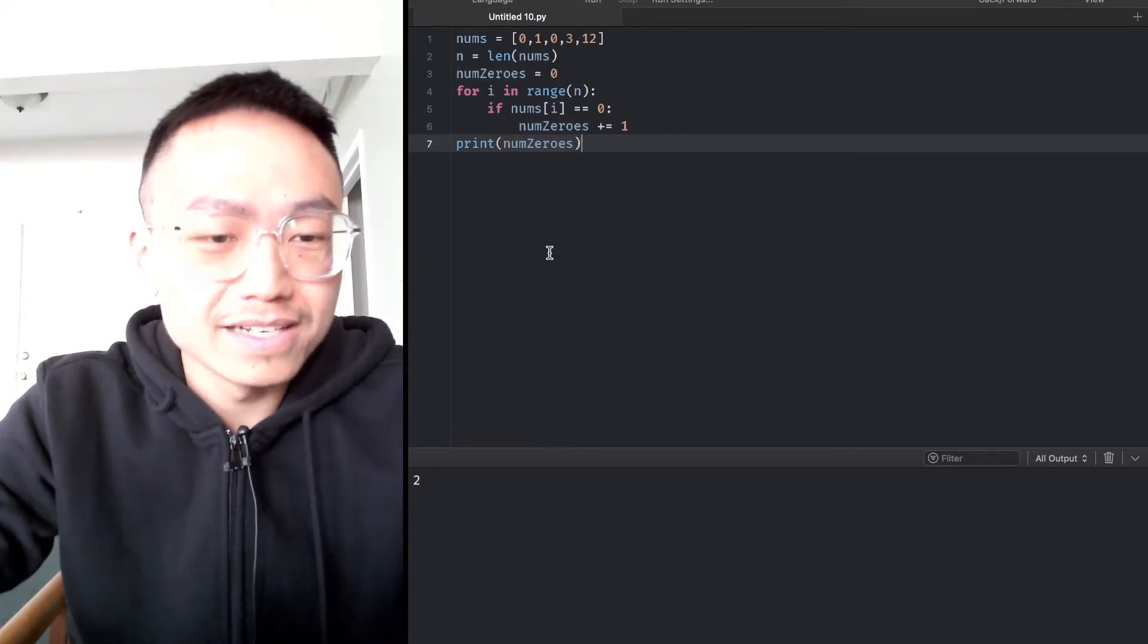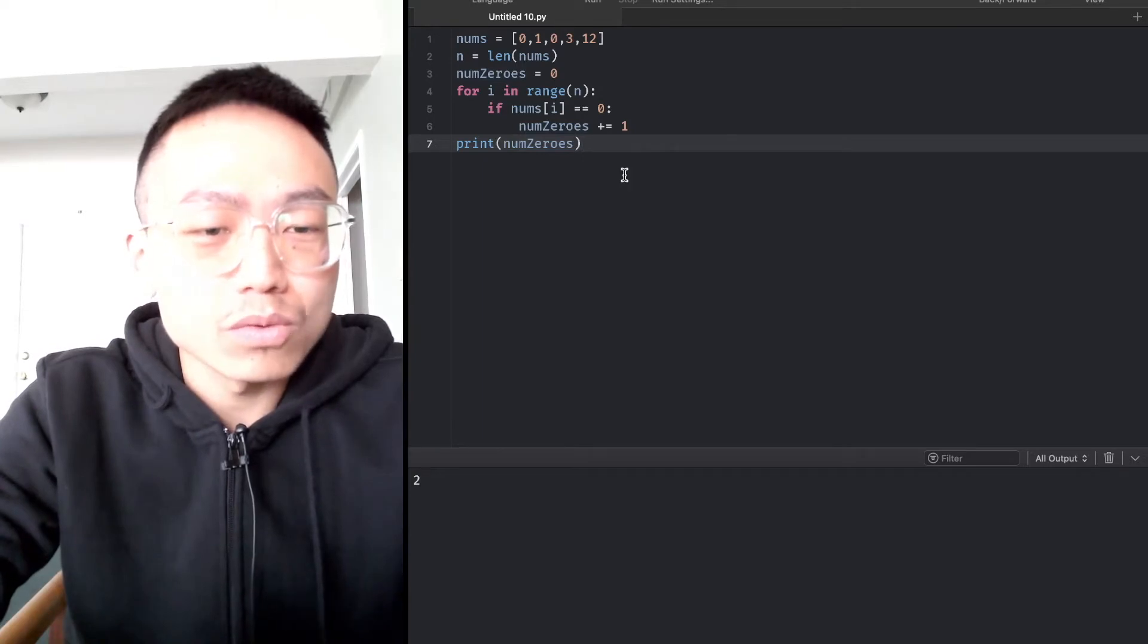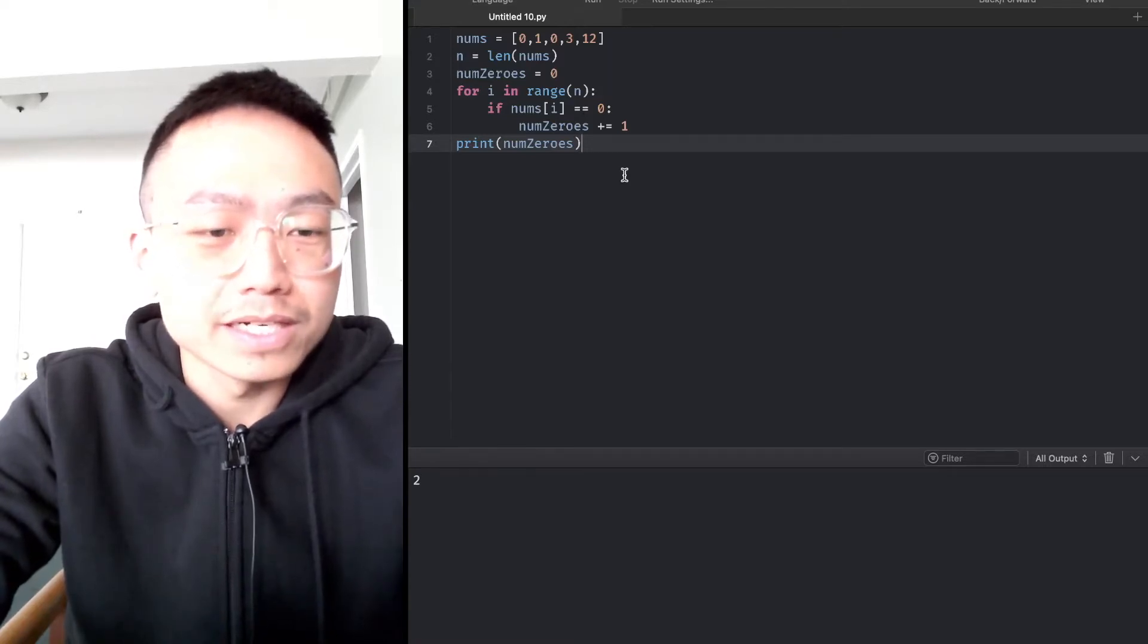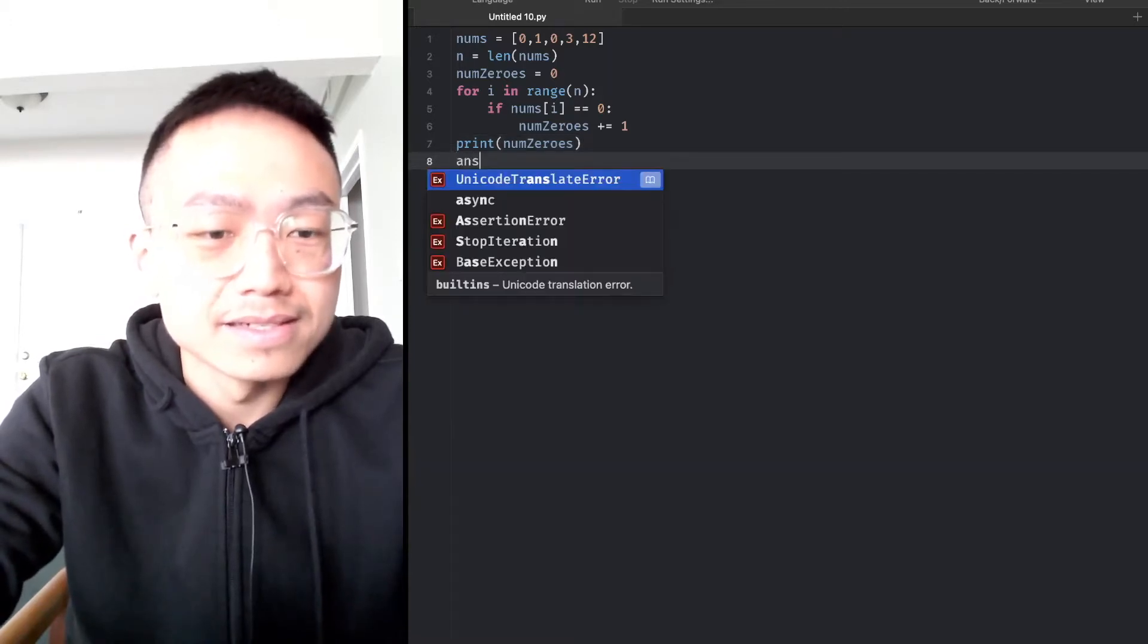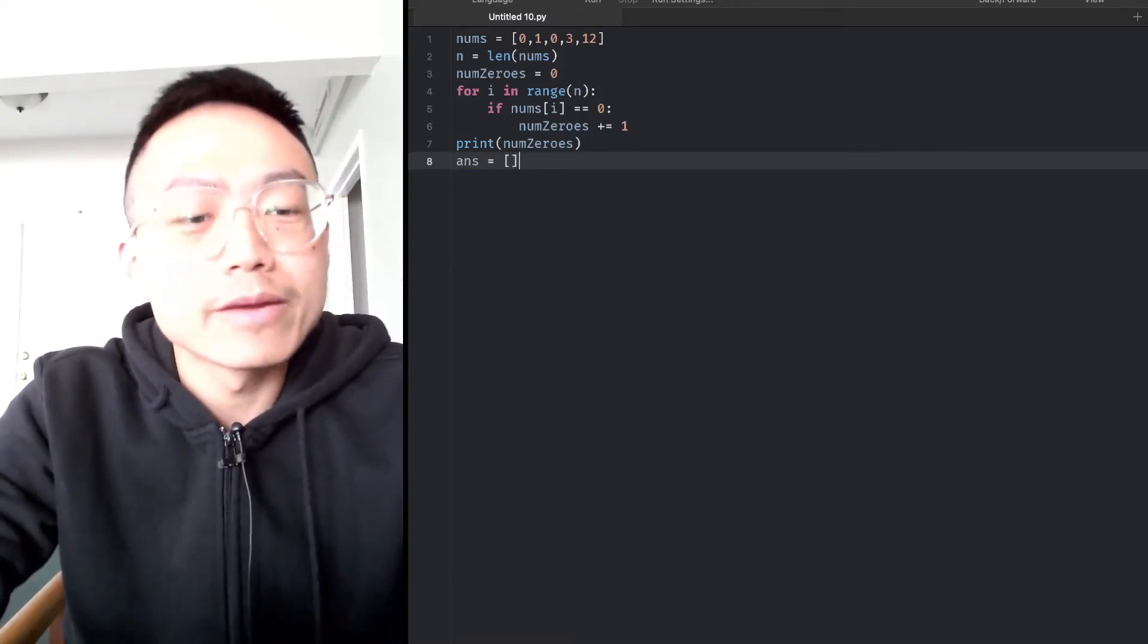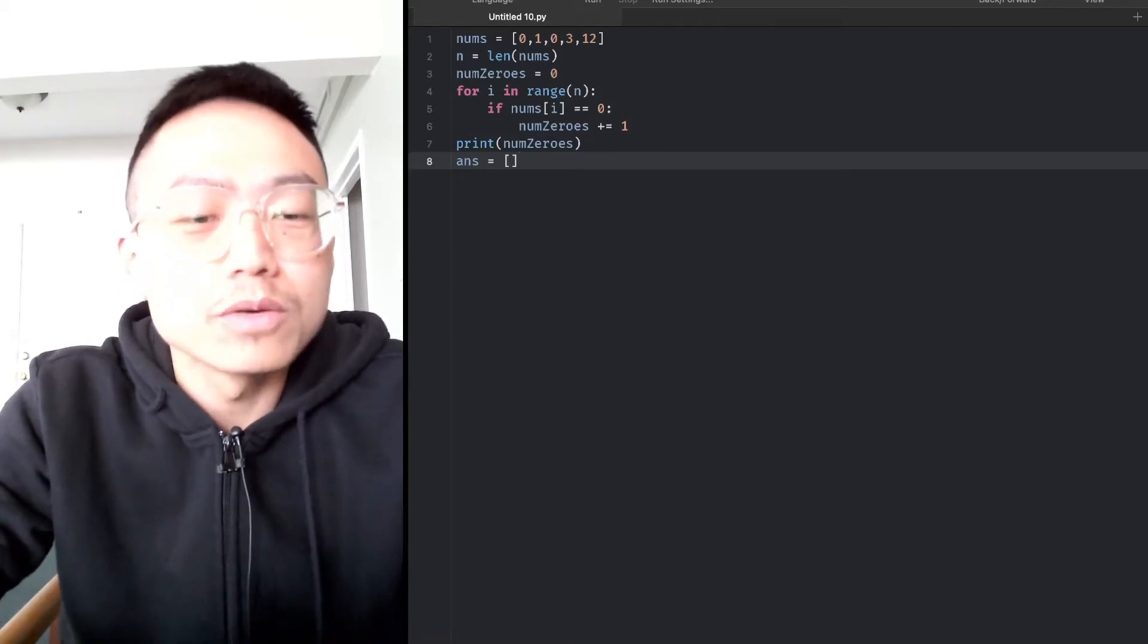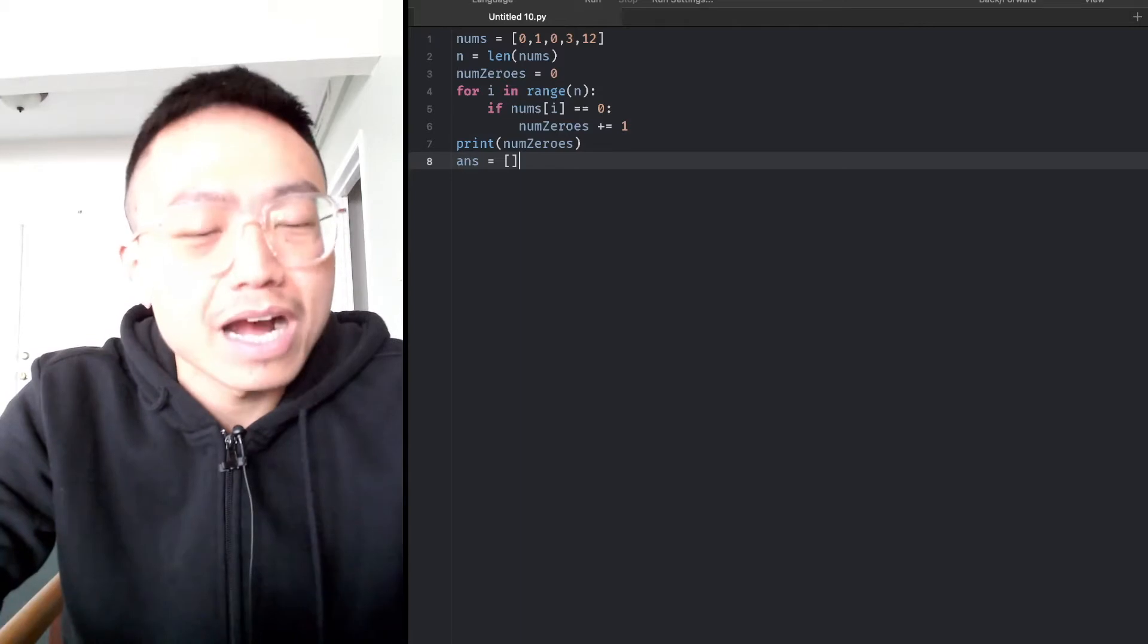We need to make all the non-zero elements remain in the original order. So we're going to create a new array, ans, an empty array. Since we create an empty array to store the results, the space complexity will become O(n).